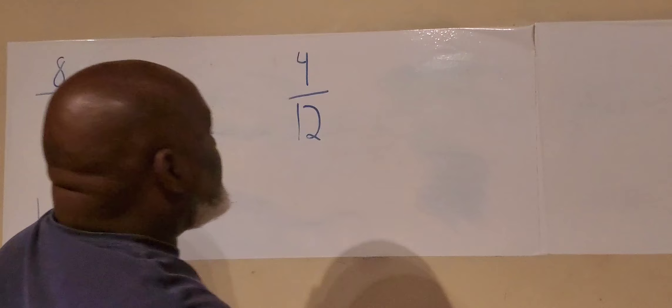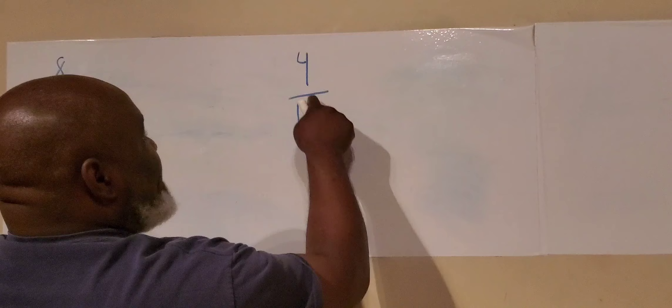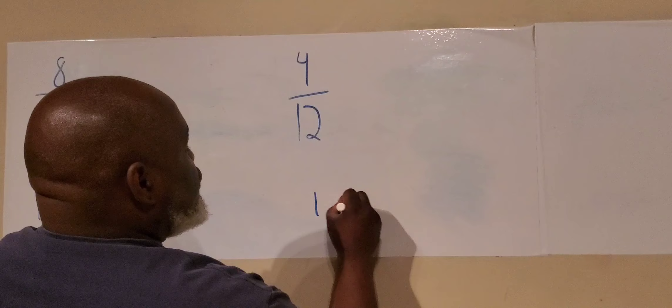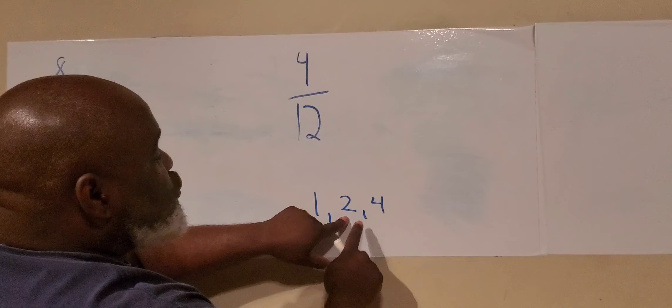Next one, we're going to go to four twelfths. First, what factors can go into four? What factors can go into 12? Let's see. We have one, two, and four. Four times one is four. Two times two is four.